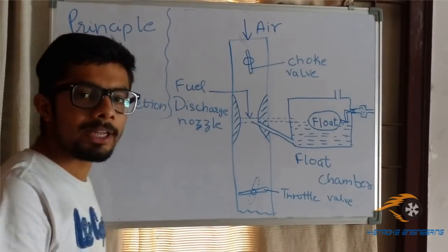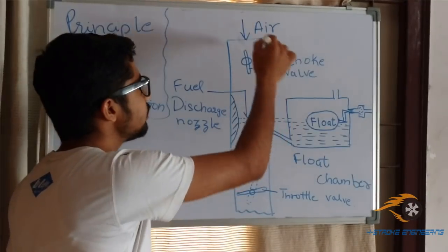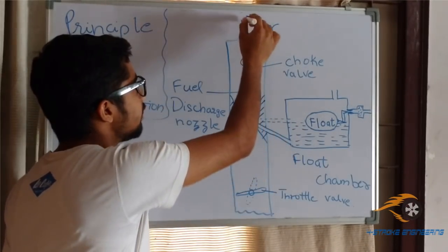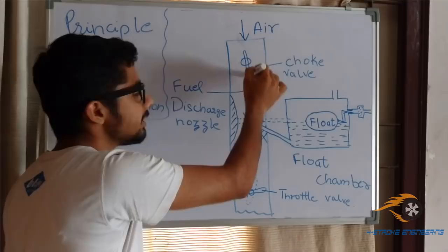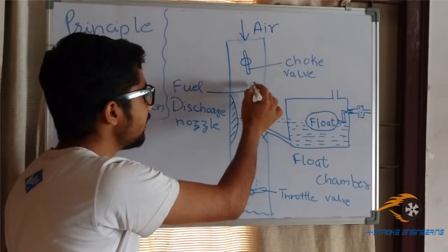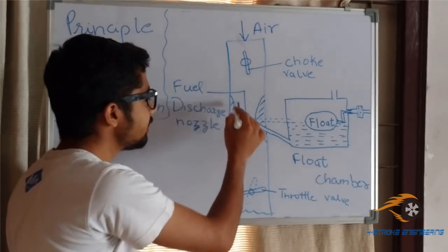Now when you apply throttle to the vehicle, the air enters the carburation chamber. From here the air enters, it passes through the choke valve and passes through this passage. This is known as a venturi.